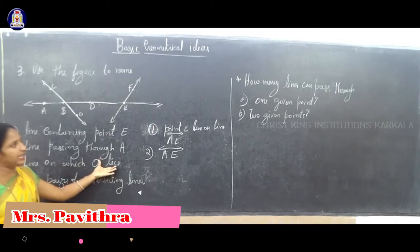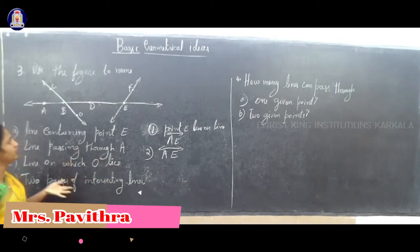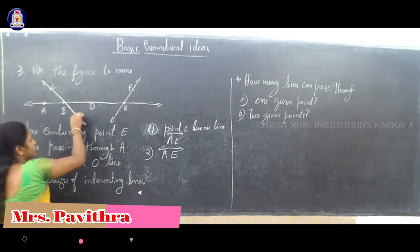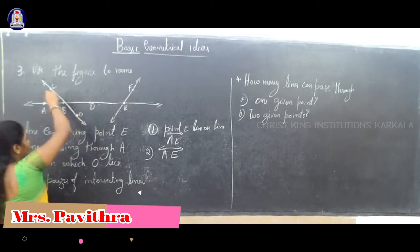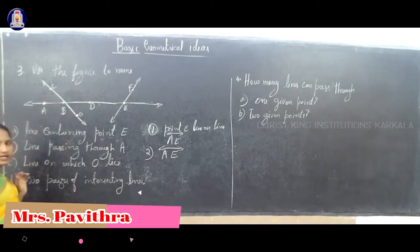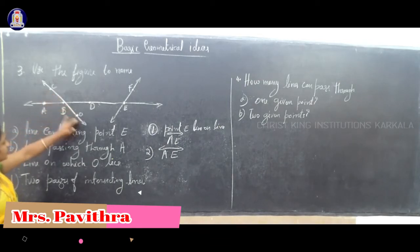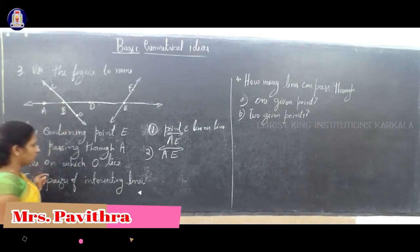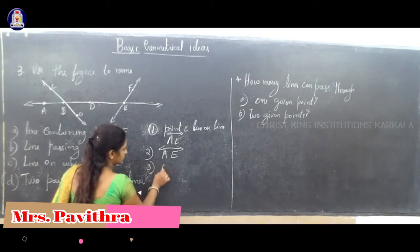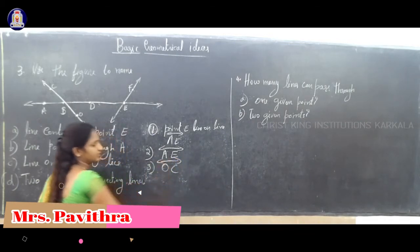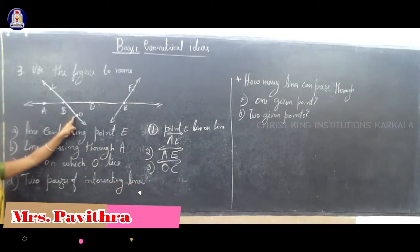Third: line on which O lies. Looking at the figure, we can see the point O here. This point O lies on the OC line. So the line on which O lies is OC. You can also say CO line. The point O lies in this line.